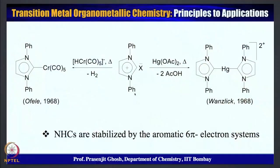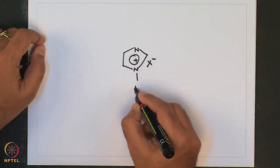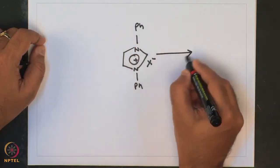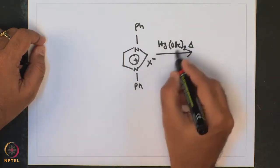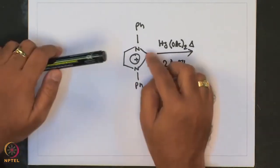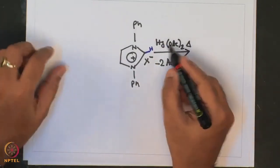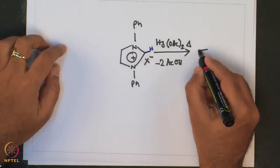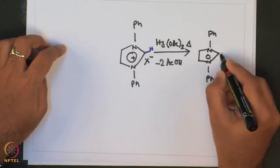Another very interesting method for preparing a carbene from its imidazolium precursor involves heating the imidazolium salt with mercuric acetate. The acetic acid molecule abstracts the proton from the C-H bond, and the carbene center is stabilized by the acetate anion, giving rise to an NHC carbene complex of the type shown.